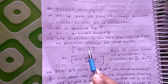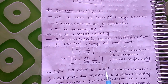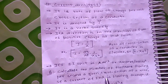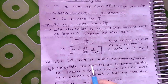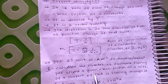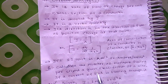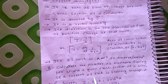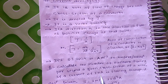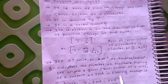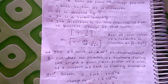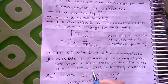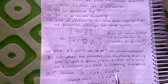इसका SI unit — current के लिए ampere और area के लिए meter square — तो current density का SI unit है ampere per meter square. अब एक basic question देखते हैं: calculate the number of electrons flowing per second through a given cross section of a wire if current is 1 milliampere — milli मतलब 10 to the power minus 3 — is flowing through it.